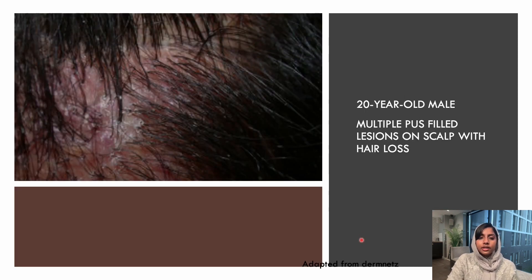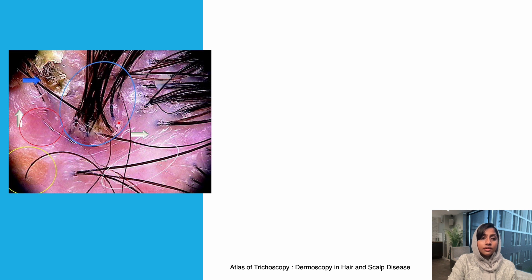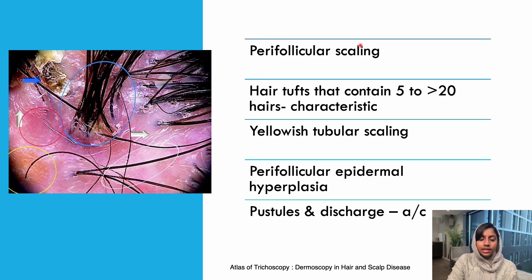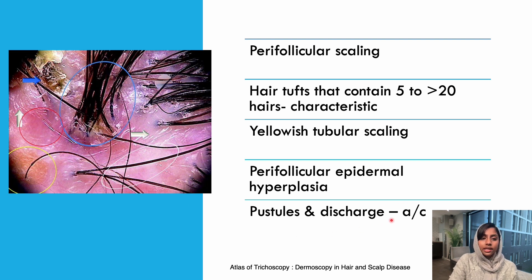The next scenario: a 20-year-old male with multiple pus-filled lesions on the scalp with hair loss. On trichoscopy, there are tufts of hair from a single follicle, perifollicular scaling, yellow scaling with background erythema, and white structureless fibrotic areas. These are features of folliculitis decalvans: perifollicular scaling, hair tufts containing 5 to more than 20 hairs, yellow tubular scales, perifollicular epidermal hyperplasia, as well as pustules and discharge — more prominent in acute scenarios.